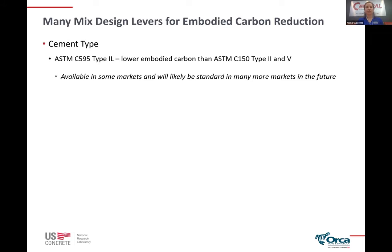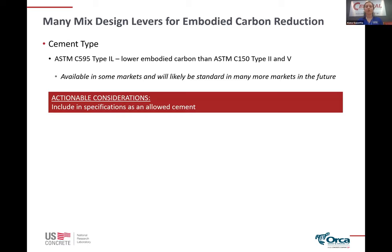The Type IL is a pretty standard cement used in the Pacific Northwest, and in California we're anticipating that in about a year it will be very standard. The holdup right now is that Caltrans needs to approve the use of it — and as a ready mix producer, we don't have unlimited silo capacity, so most producers stick with a cement where they can do both Caltrans and non-Caltrans work. But once Caltrans approves the use of C595 cement — looking like October of this year — it's likely that a lot of producers would be transitioning over, and that would just be standard in the marketplace. The actionable consideration is to have specifications allow both types of cements.